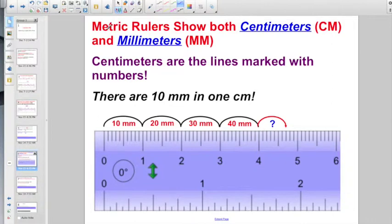So, now we're moving on to the metric side of the ruler. There's always an inch side. And, there's usually always a metric side, too. You want to be very careful that you're always using the right side of your ruler. So, metric rulers show both centimeters, which is abbreviated CM, and millimeters, which is abbreviated MM. Centimeters are the lines marked with numbers.